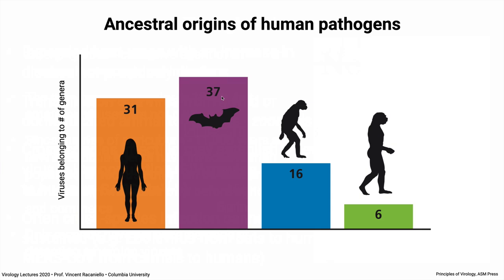Viruses belonging to 37 genera are zoonotic pathogens that spill over from zoonotic sources — like MERS coronavirus, Lassa virus, Ebola, Nipah, Hendra — brand new spillovers that don't transmit well from human to human. Another 16 genera we inherited from hominin ancestors like Australopithecus, transmitted down through all descendants to Homo sapiens. And six came from Homo species like Homo neanderthalensis.